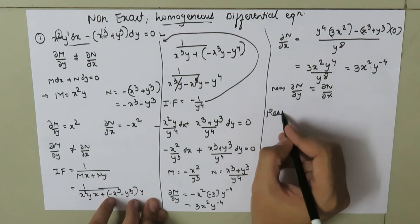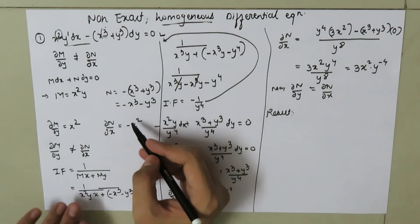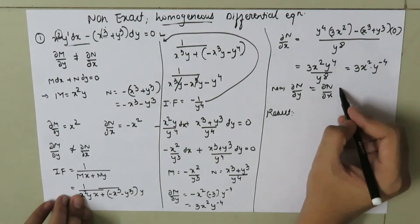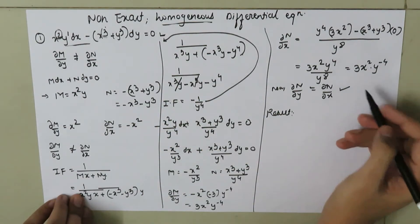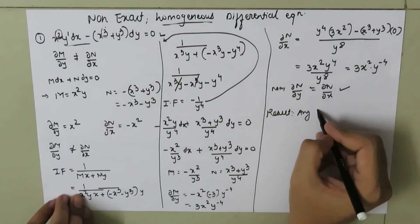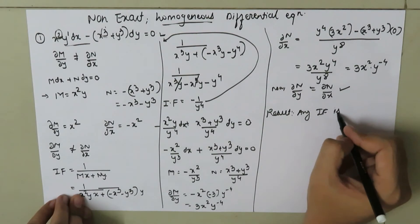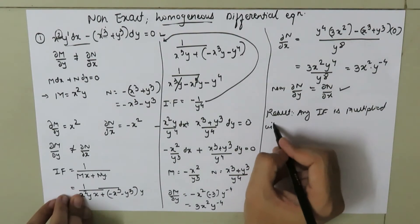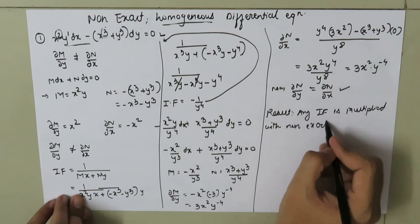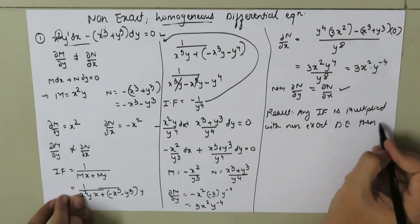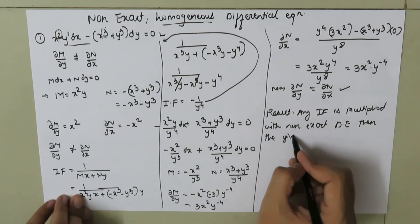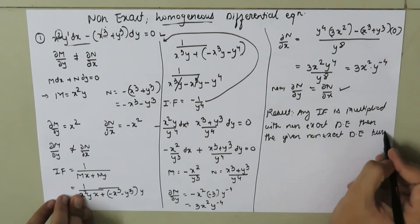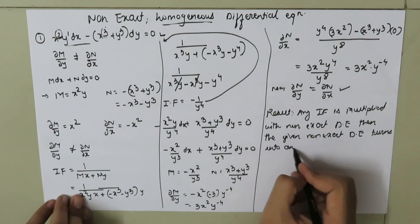So the conclusion is: if an integrating factor is multiplied with a non-exact differential equation, then it turns into an exact differential equation.